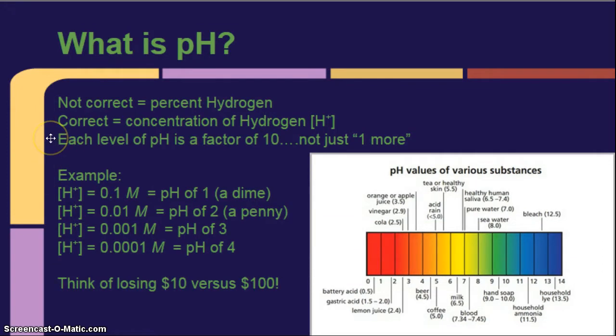So, each level of pH is a factor of 10, not just one more. What do I mean by that? Think of losing $10 versus losing a $100 bill. Okay, that's a huge difference.